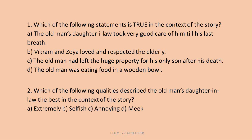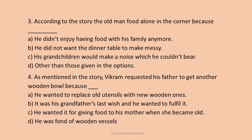Question 3: The old man ate food alone in the corner because: A) he didn't enjoy having food with his family anymore; B) he did not want the dinner table to be messy; C) his grandchildren would make a noise. The answer is B — he did not want the dinner table to be messy. Question 4: Vikram requested his father to get another wooden bowl because: A) he wanted to replace old utensils; B) it was his grandfather's last wish; C) he wanted it for giving food to his mother when she became old; D) he was fond of wooden vessels. The answer is C.